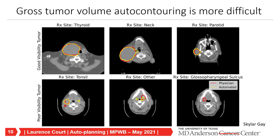Everything discussed so far involves anatomical structures that are fairly similar from patient to patient. What about gross tumor volume auto-contouring? That's much more difficult depending on the target. Results from Skyler Gay show attempts to automate GTV contouring for palliative head and neck cases. For tumors that are easy to see, auto-contouring works well. But for poor-visibility tumors, the deep learning faces the same challenges we do as humans—it's much more difficult, and the automatic tool may not get it right, draw in the wrong place, or fail to find the tumor entirely.